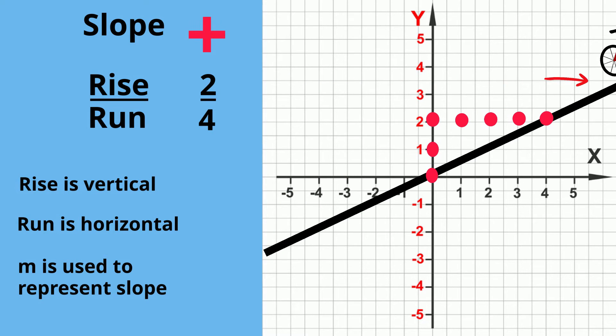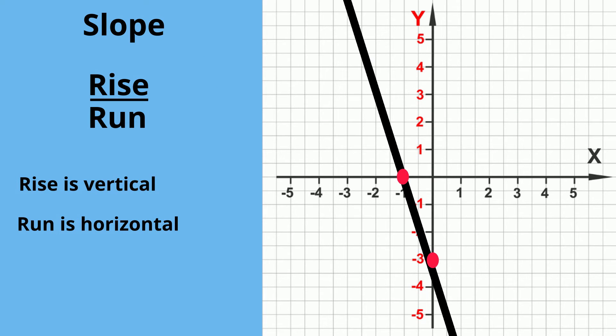How about this line? Let's take a look at the rise. It goes downward, so it's negative 1, negative 2, negative 3, and then the run is 1. So the slope is negative 3, or negative 3 over 1.